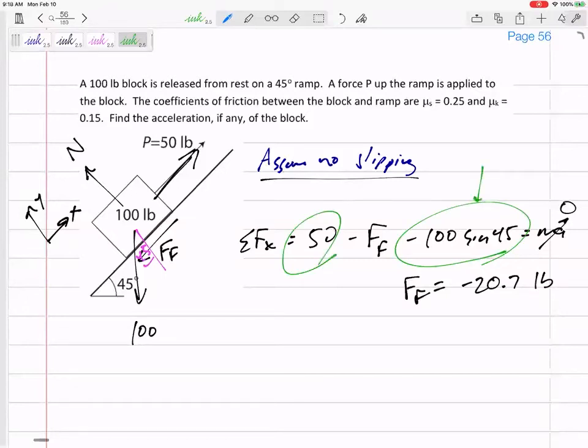And mathematically, why is it the wrong direction? Because this 100 sin 45 is larger than the 50. So the force pulling it down is beating the force pulling it up, so its impending motion is down. So I should draw my force of friction up. Force of friction is really 20.7 up.